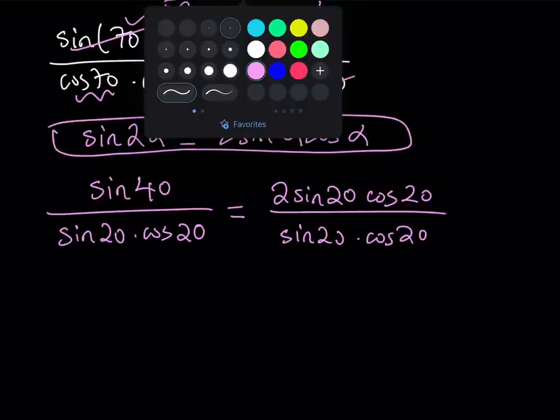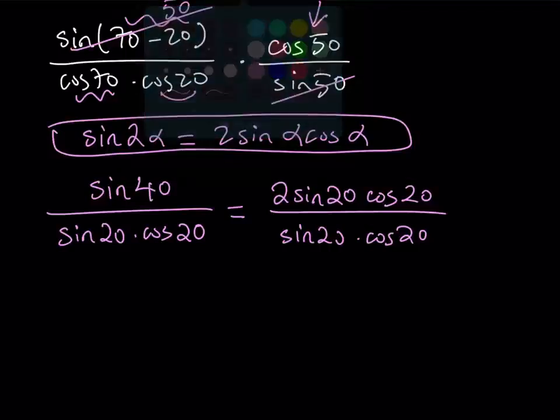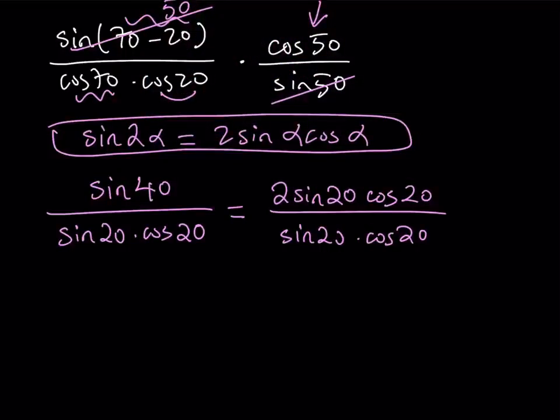Okay, so what am I doing at this point? Well, we can just go ahead and simplify some terms here, like pretty much everything, right? Sine 20 cancels out, cosine 20 cancels out, and we end up with 2.